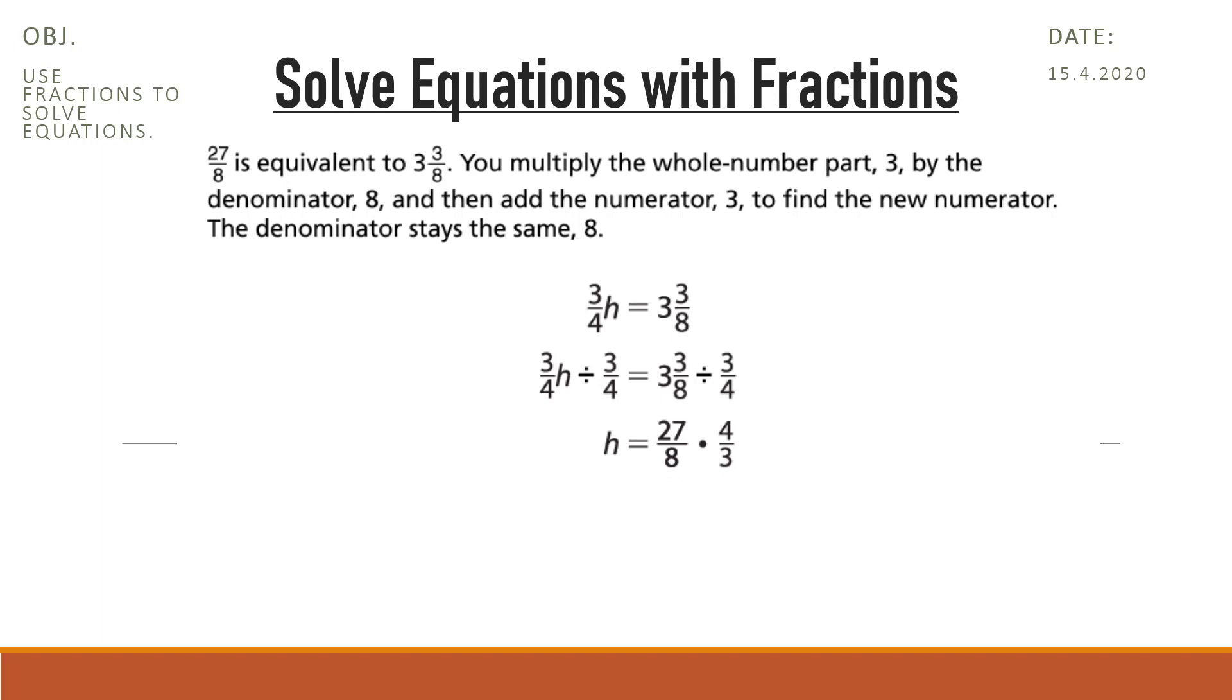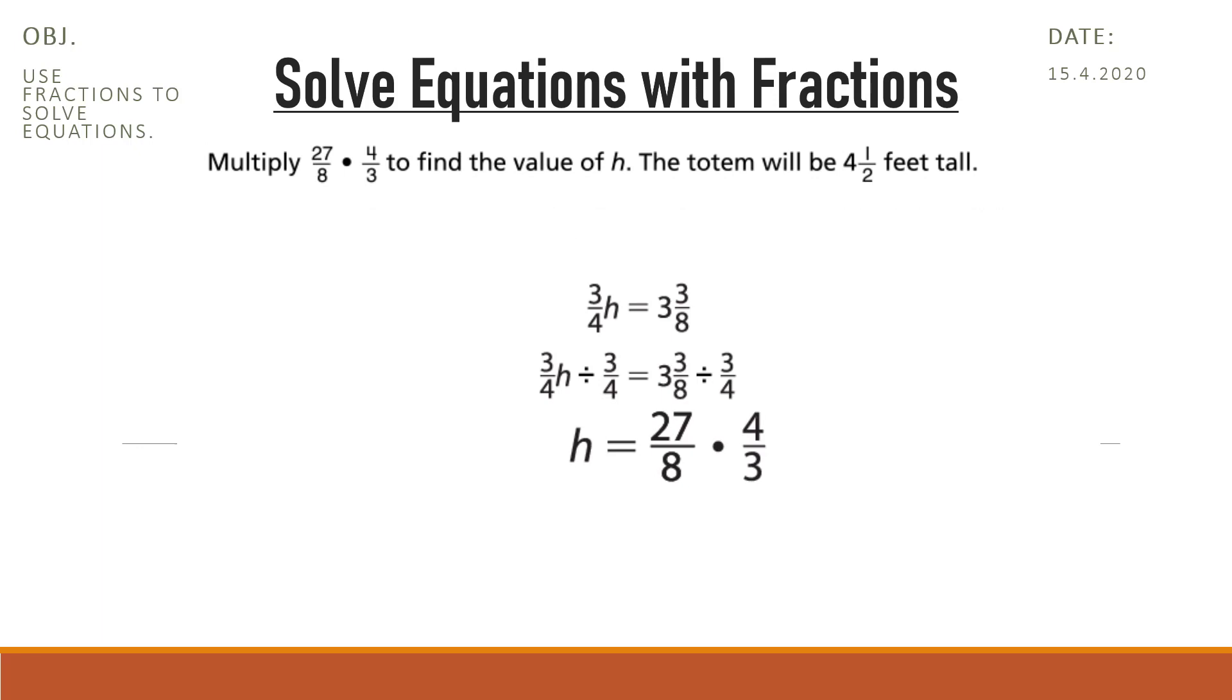You multiply the whole number part, 3, by the denominator, 8, and then add the numerator, 3, to find the new numerator. The denominator stays the same, 8. Multiply 27/8 times 4/3 to find the value of h. The totem will be 4 and 1/2 feet tall. Now you know how to solve algebraic equations with fractions.